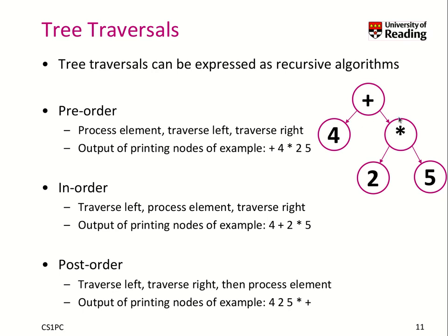On this node, we traverse the right. If you print the expression for each node, you would get: plus, four, then the multiplication times, then left two, and right five. That's basically the resulting pre-order of our expression.